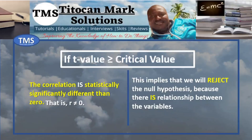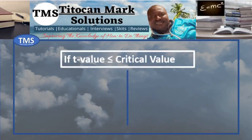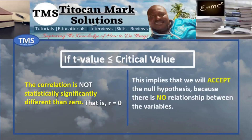On the other hand, if the t-value is less than the critical value, it means the correlation is not statistically significantly different from 0 — that is, r is equal to 0. This therefore implies that we accept the null hypothesis and reject the alternate hypothesis because there is no relationship between the variables.